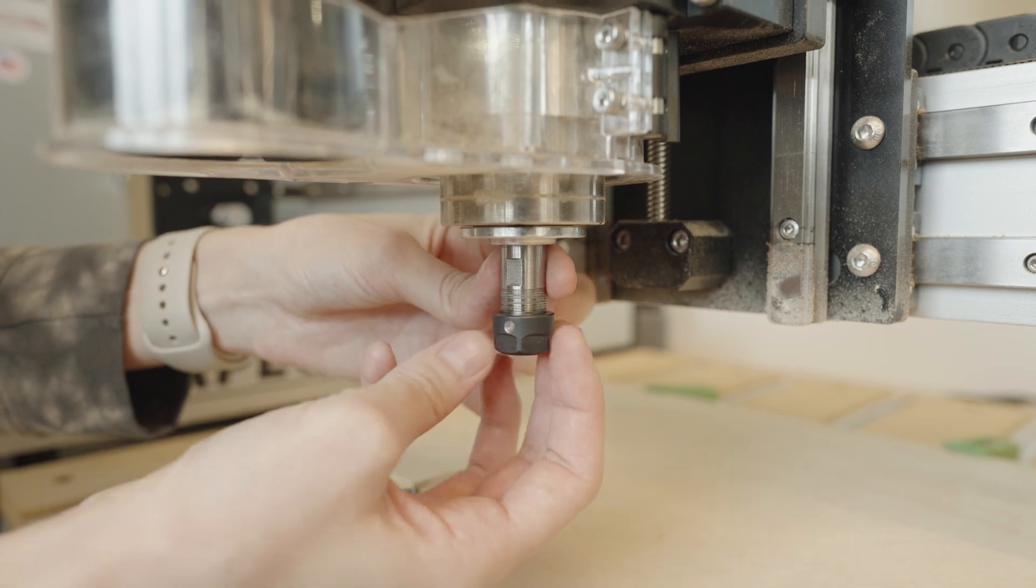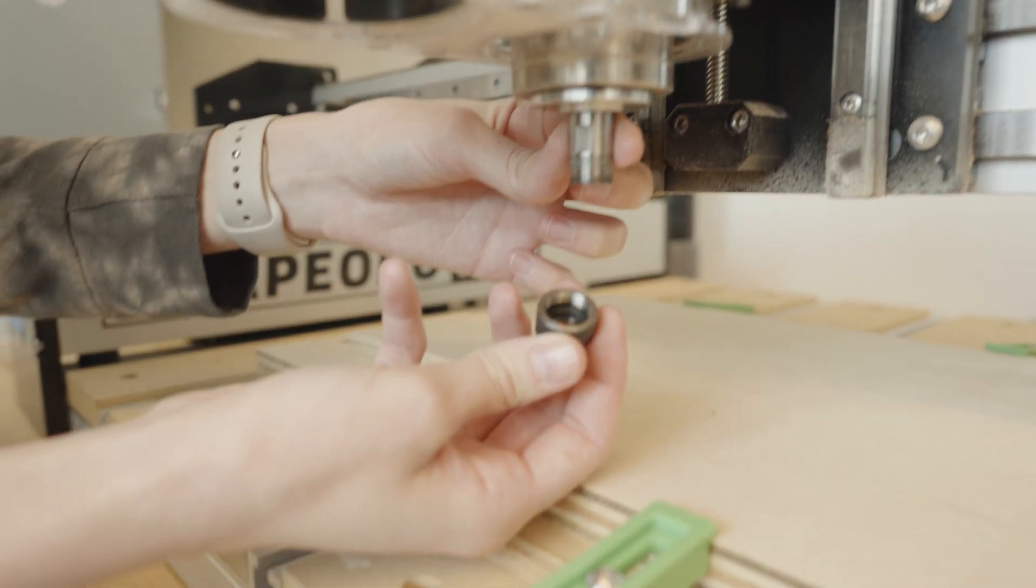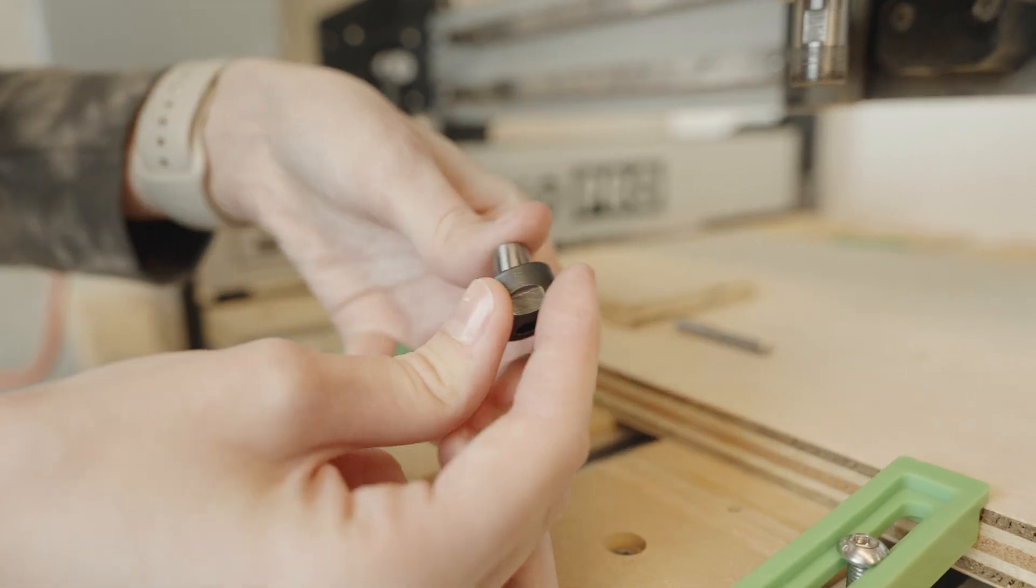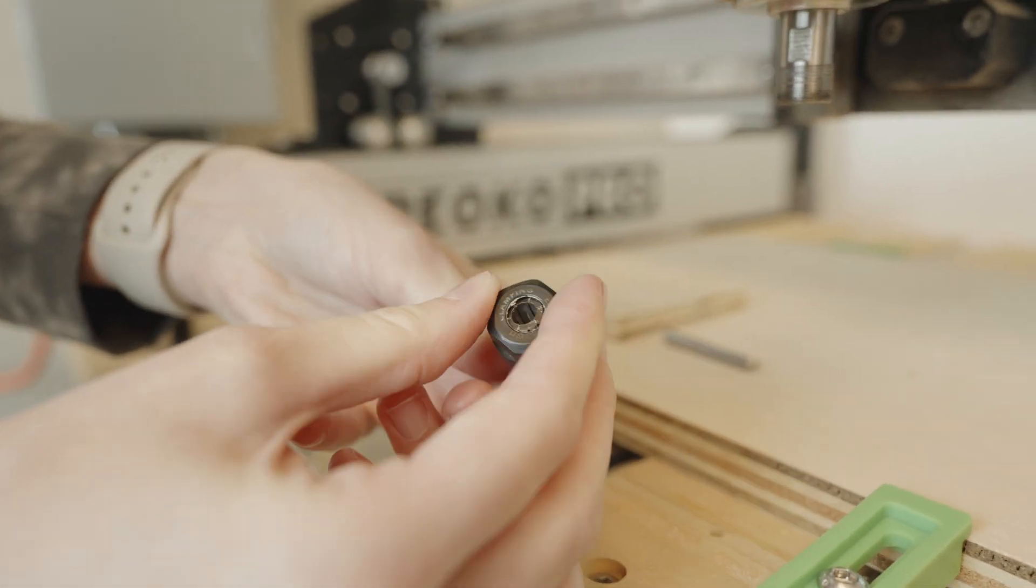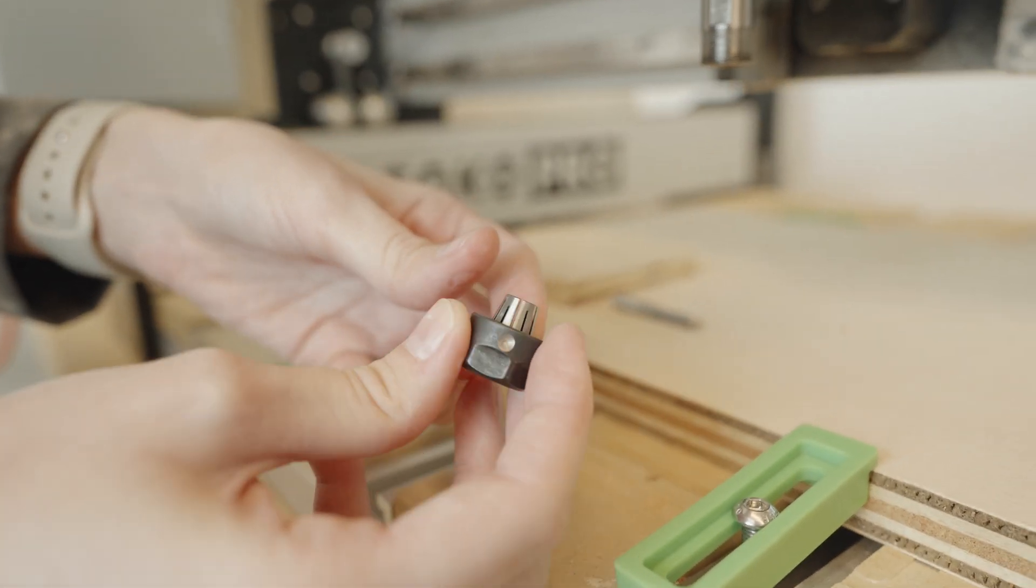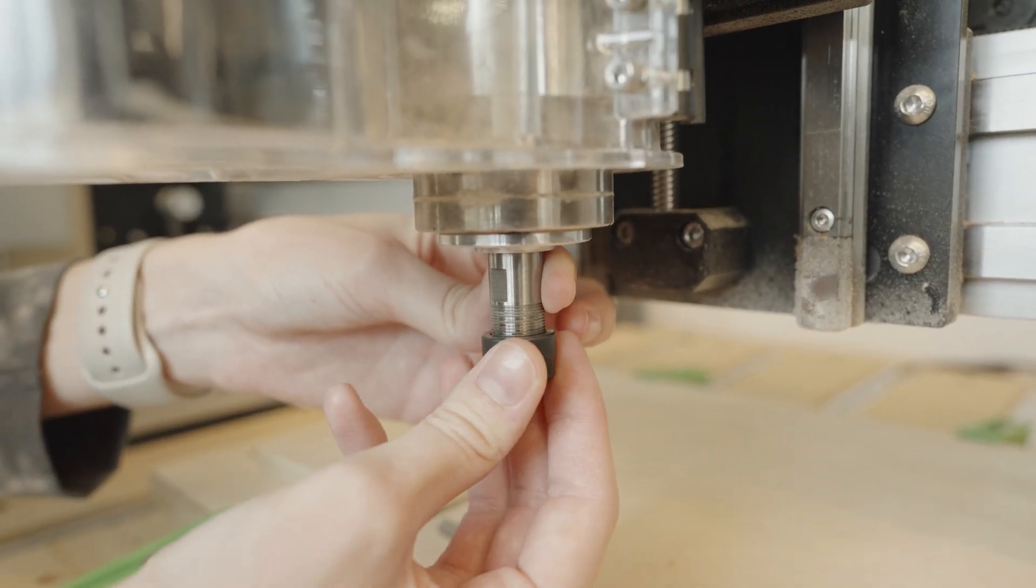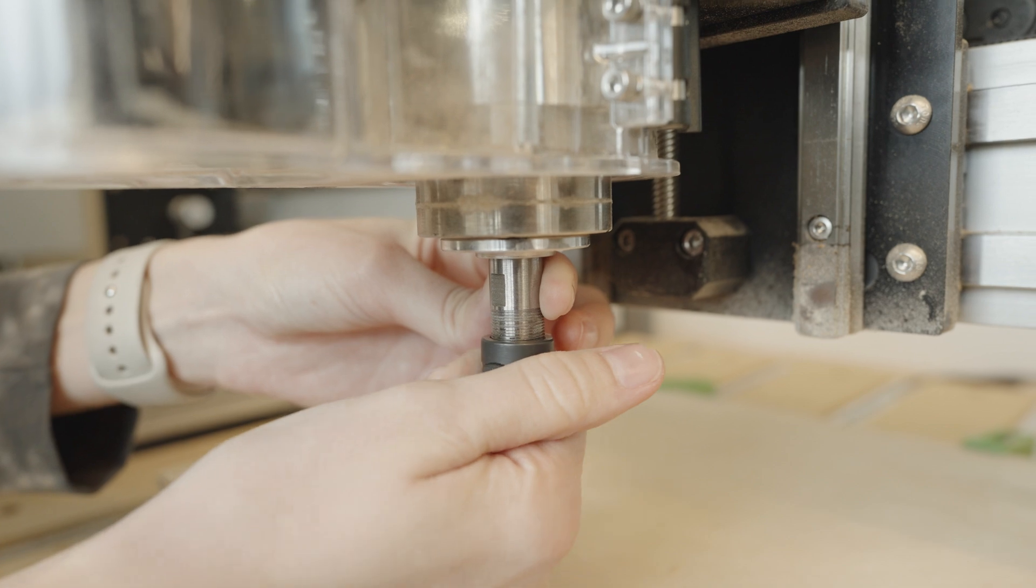So, the first thing we're going to do is unscrew the collet nut by hand from the spindle. Now, after that, we're going to take our ER collet and click it in. And then we're going to screw it back onto the spindle, one or two threads only. You want to be careful not to drop this.